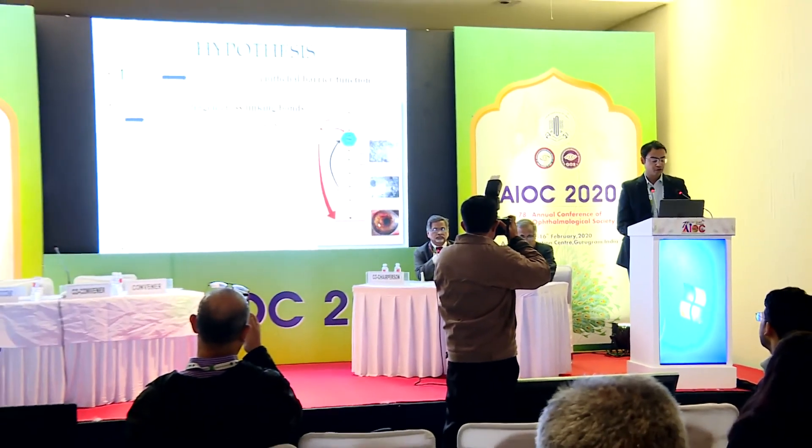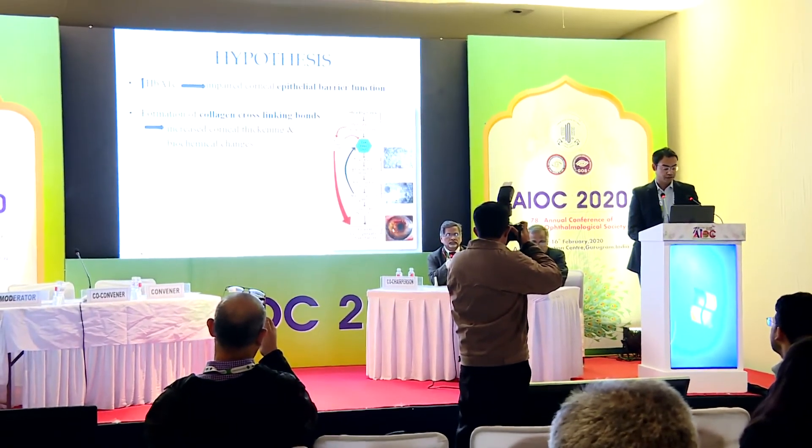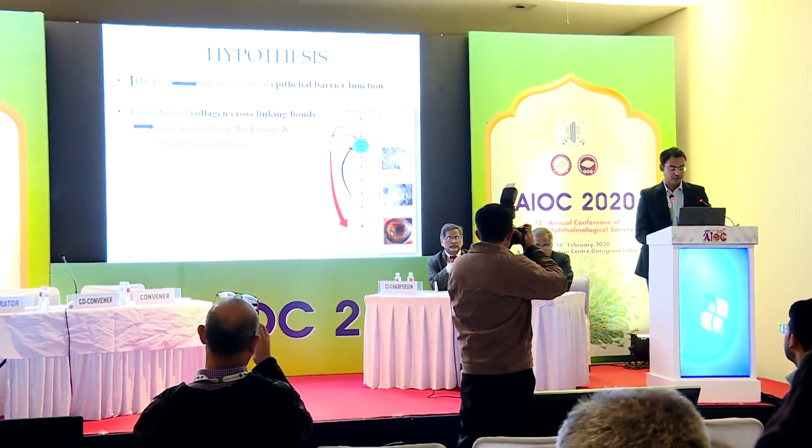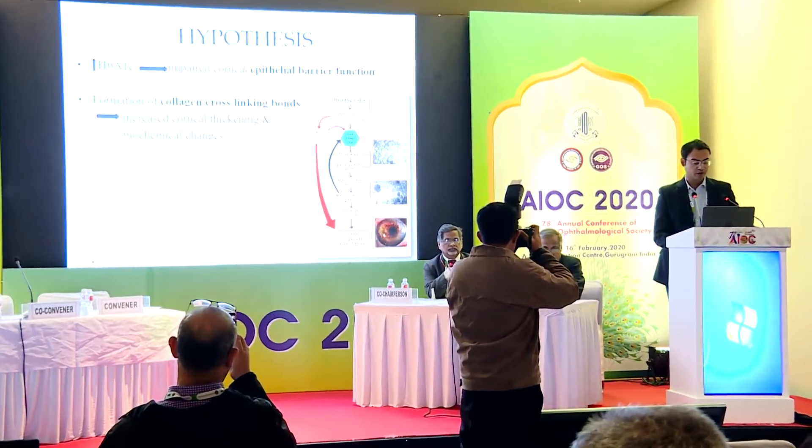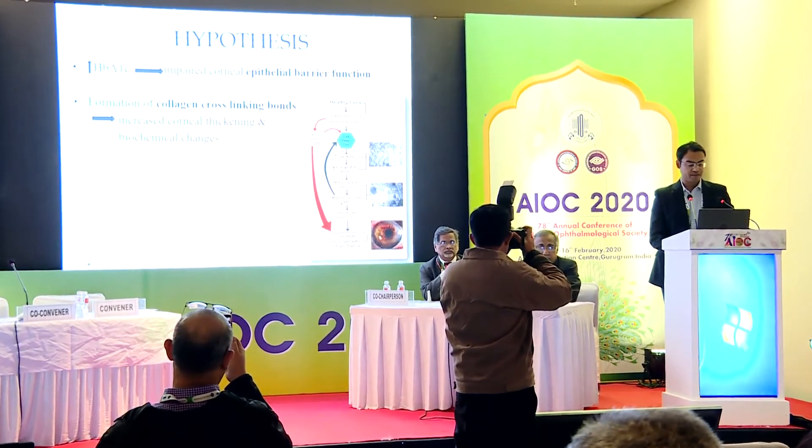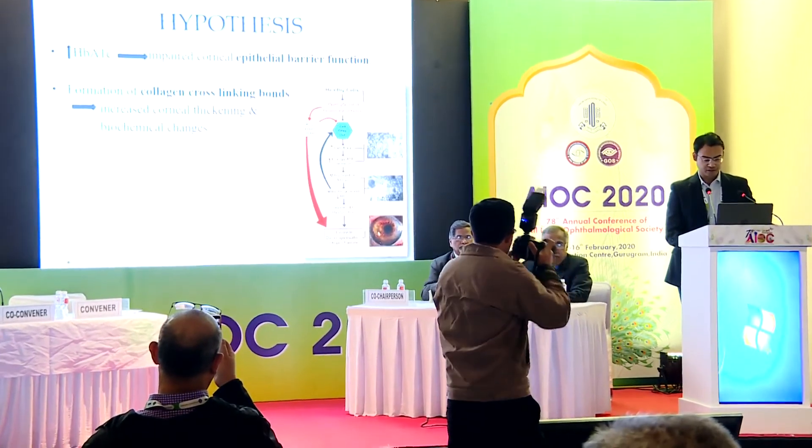The hypothesis is that if HbA1c levels increase, it leads to impaired corneal epithelial barrier function, and also leads to formation of collagen cross-linking bonds which results in increased corneal thickness and biochemical changes.